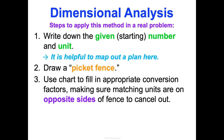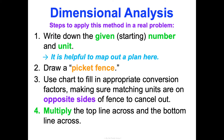Then you draw a picket fence — a chart to fill in appropriate conversion factors, making sure your matching units are on opposite sides of the fence to cancel out. That's why it's important we can write conversion factors either way. Then we multiply the top line across and the bottom line across, and then divide top by bottom.